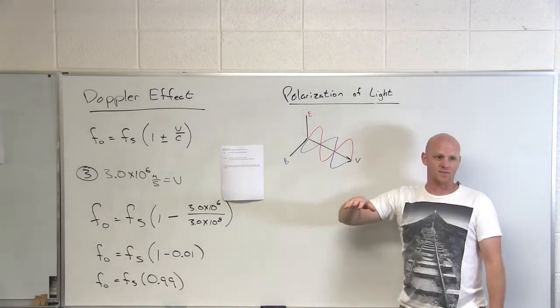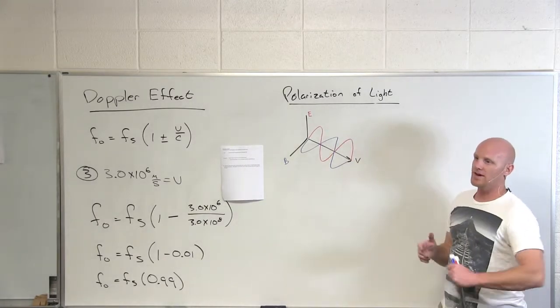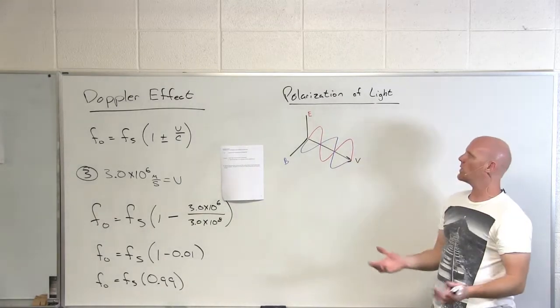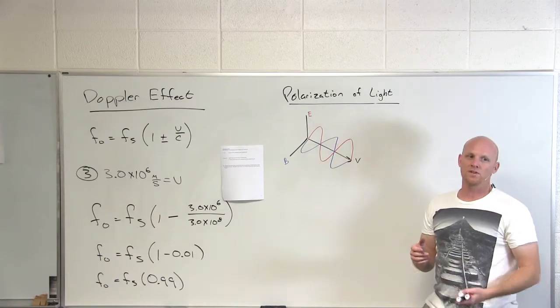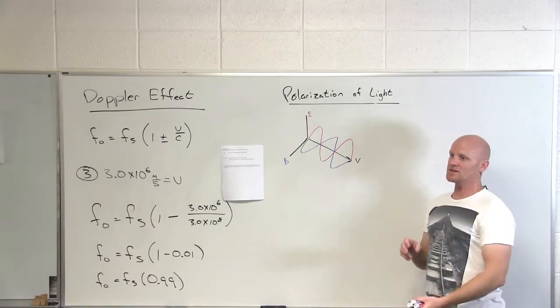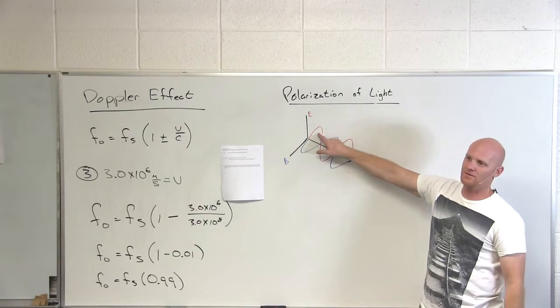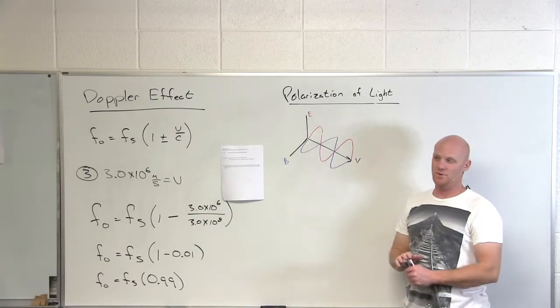The big thing is that they're always going to be mutually perpendicular to each other, but they don't have to be the same as every other light wave out there. If light is unpolarized, you've got a mass of all those different orientations associated with it. We define the orientation of the polarization of light based on the direction of the electric field.